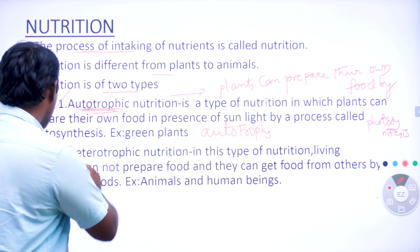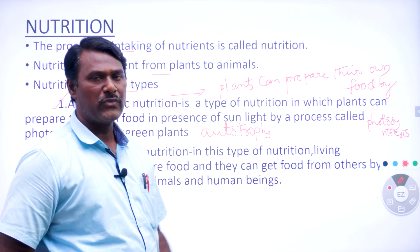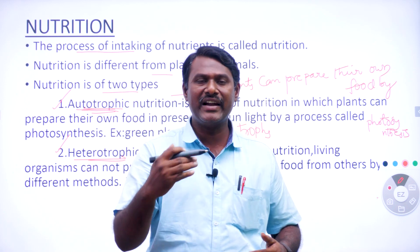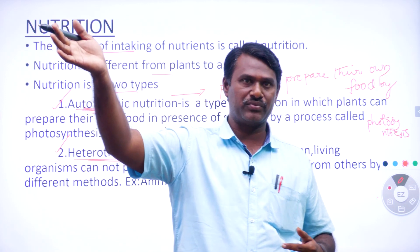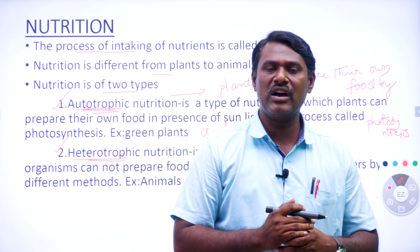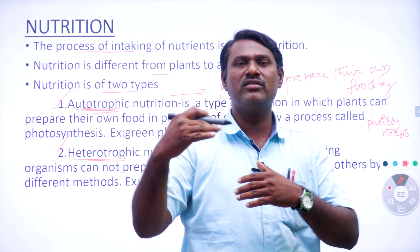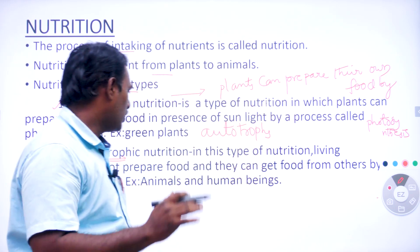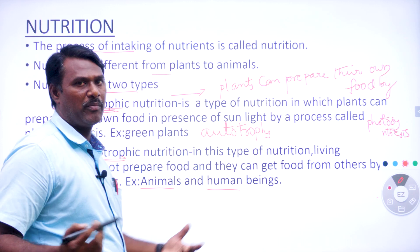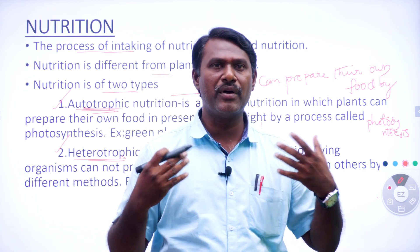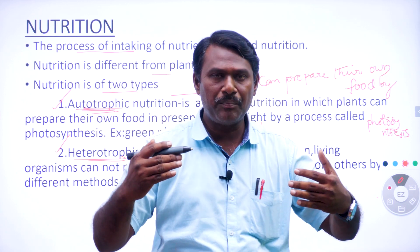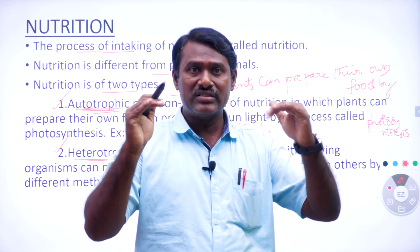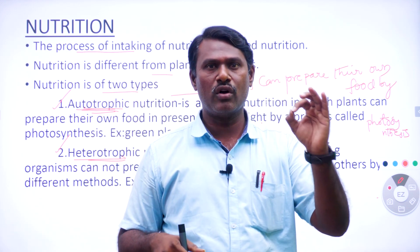The second type of nutrition is called heterotrophic nutrition. Heterotrophic nutrition can be defined as the type of nutrition in which living organisms get food from other organisms. They cannot prepare food on their own — that is called heterotrophic nutrition. The best example for heterotrophic nutrition is animals and human beings. We depend upon plants for getting food material, so we are considered heterotrophs.